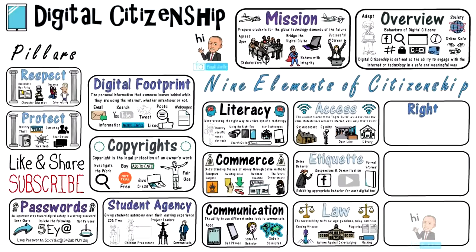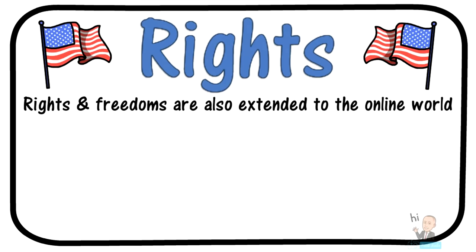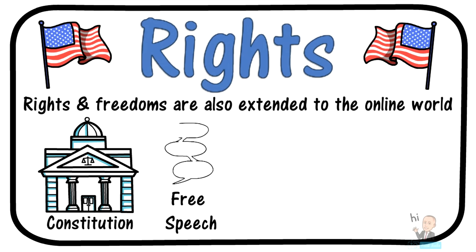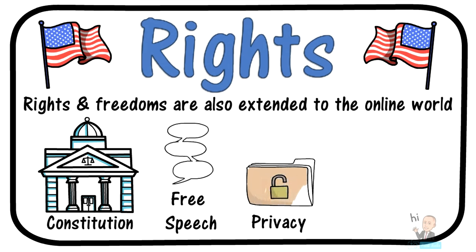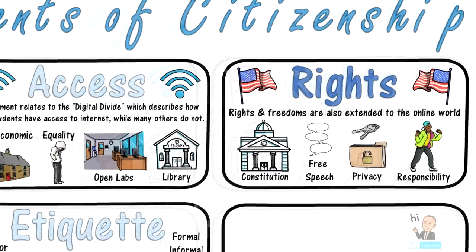Moving forward, the next element is called digital rights. Rights and freedoms are also extended to the digital world. All citizens in the United States are afforded a number of inalienable rights under the Constitution, and that also includes rights for digital citizens. One of those rights includes the right to free speech — remember, free speech is not the same thing as hate speech, and hate speech is regulated against. You also have the right to a certain level of privacy while on the internet. Platforms that promise to keep your information private must do exactly that. With rights come responsibilities: appreciate them, do not abuse them, and make responsible decisions.